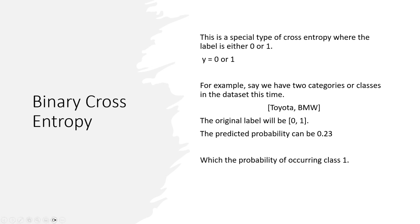In this one, we chose BMW to be class 1. So this 0.23 is the probability of occurring BMW or probability of class 1. So you can get the probability of occurring 0 or Toyota by doing this: 1 minus 0.23, which is 0.77. The probability of occurring 0 or Toyota is 0.77, so the predicted class is actually Toyota here. So this is the basic understanding of binary classification.